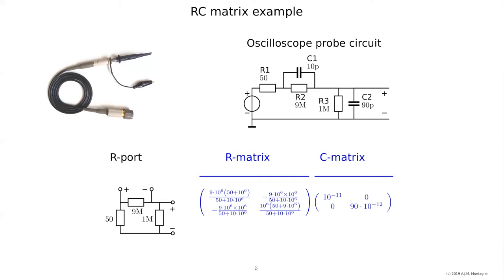What is a C-matrix? A C-matrix tells me there is 10 pF connected to port one and there is 90 pF connected to port two, so there you only have diagonal elements telling you which capacitance is connected to which port.